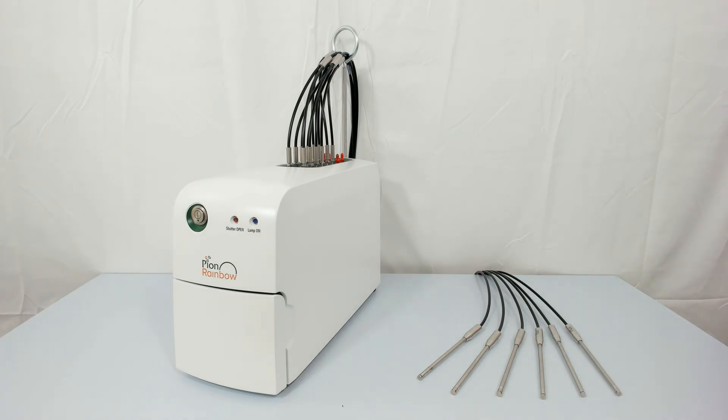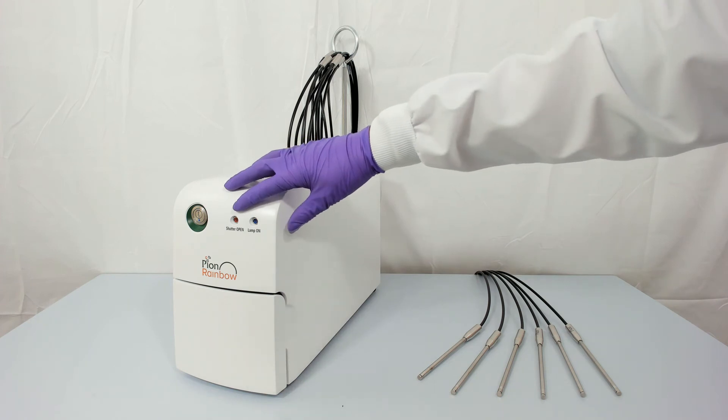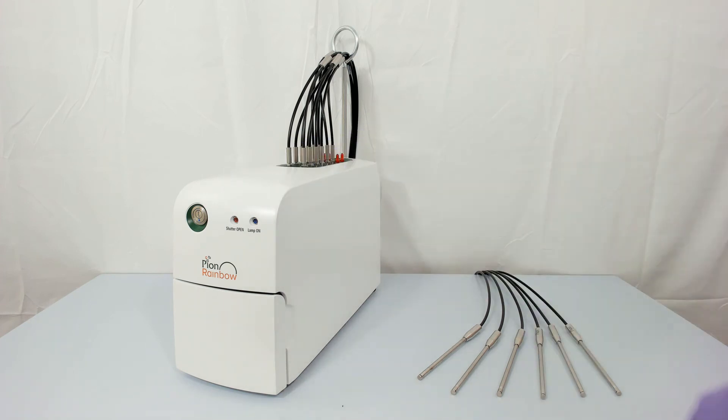The instrument is powered on with one press of the power button, like so. On the front panel, we have two status lights of note. On the left, indicating the status of the shutter which controls the emission of the light through the fiber optics. When illuminated, the shutter is open and allowing light to pass.